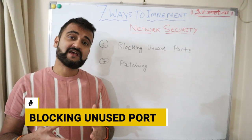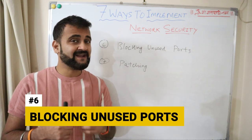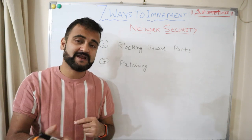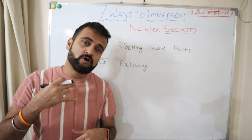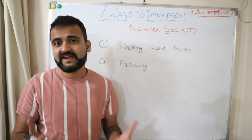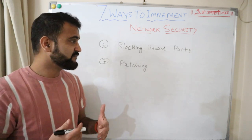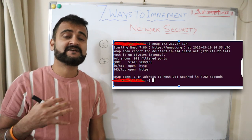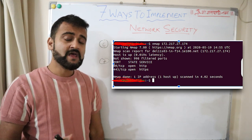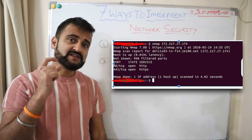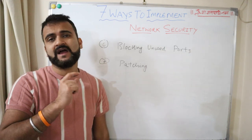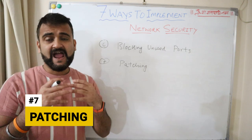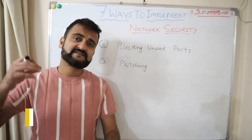The sixth method is blocking unused ports. We often become negligent when spinning up a machine by leaving all default ports open, which is a vulnerability and a threat. Running commands like nmap gives you the list of active listening ports on your server. You must ensure that only the ports which are needed are open, and all the rest are closed.